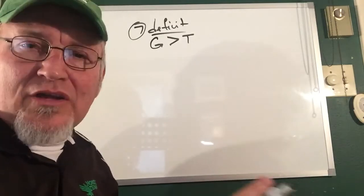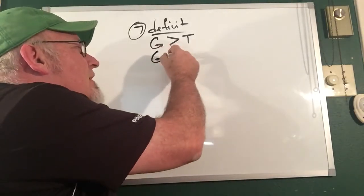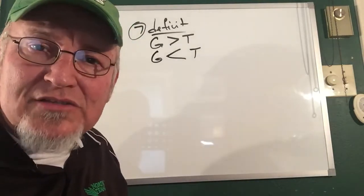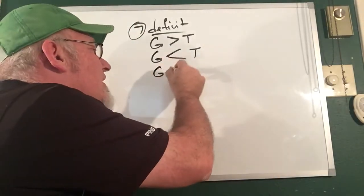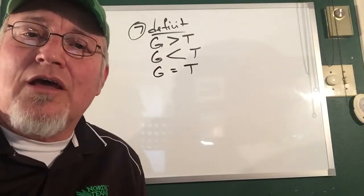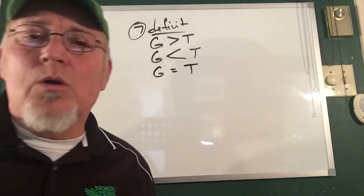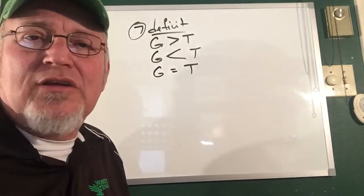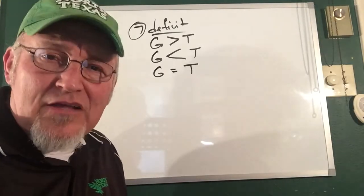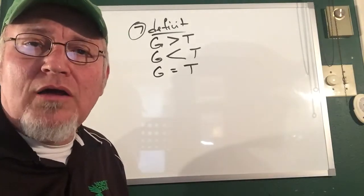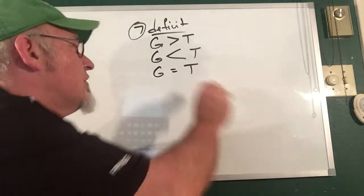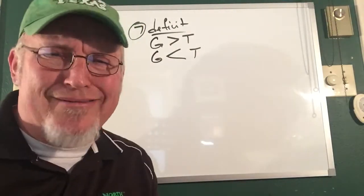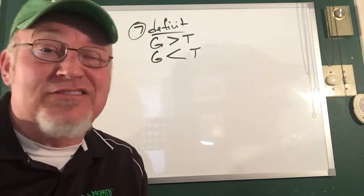Before I get into that, I want to clarify the other conditions that could exist. If your government spending is less than your tax receipts, that's called a budget surplus. And if your government spending is equal to your tax receipts, that's called a balanced budget. My only comment about a balanced budget is that it's important to note that the federal government is not required by law to run a balanced budget. A budget surplus, you may be thinking that probably never happens. Well actually, it's rare but it has occurred.